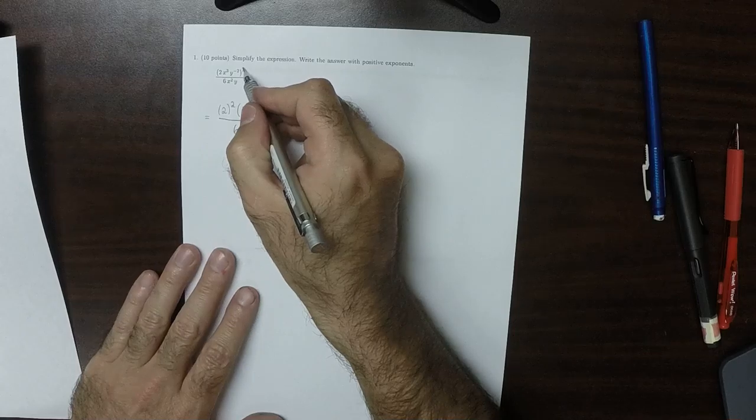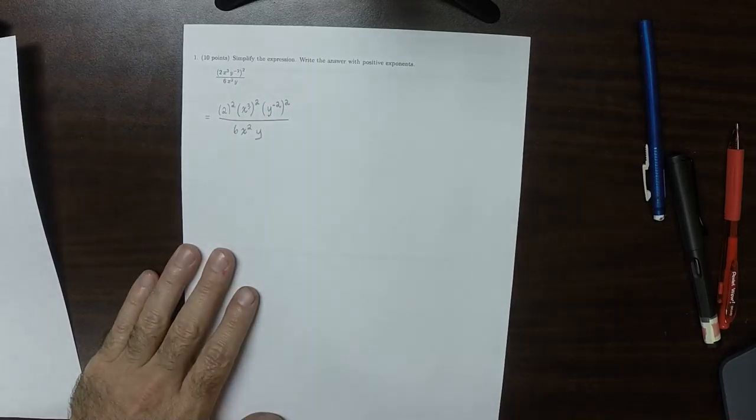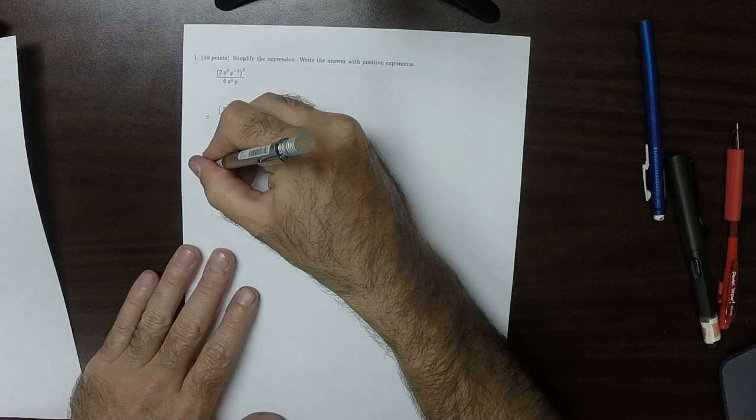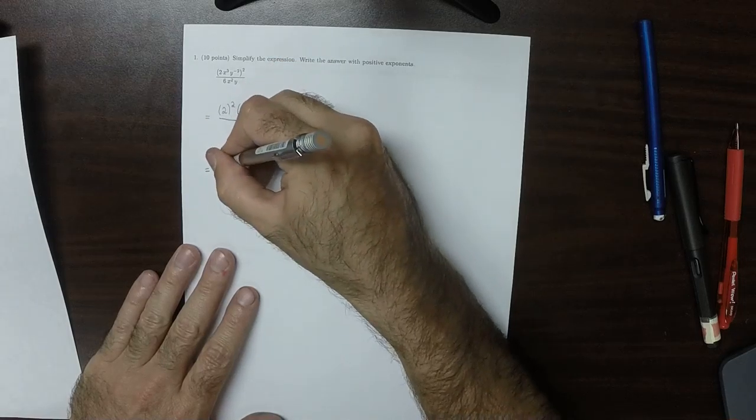So this 2 went to each individual factor. So now we have iterated exponents. Well, 2 squared, that's just 4.